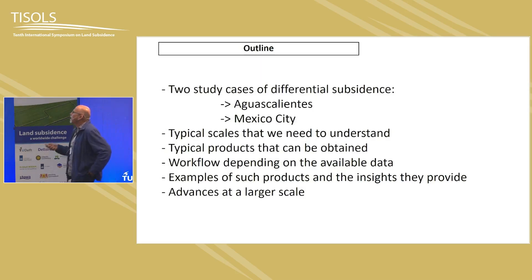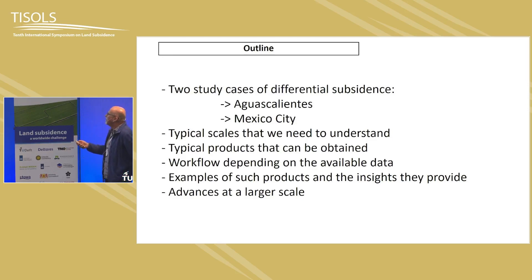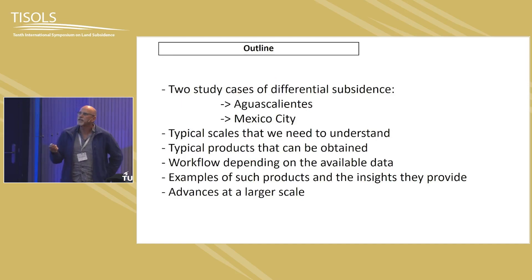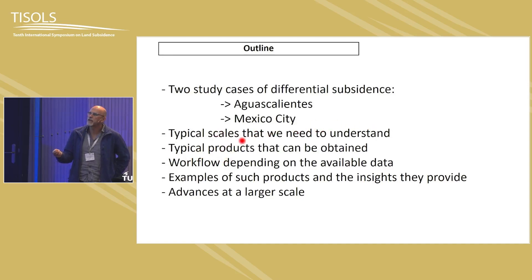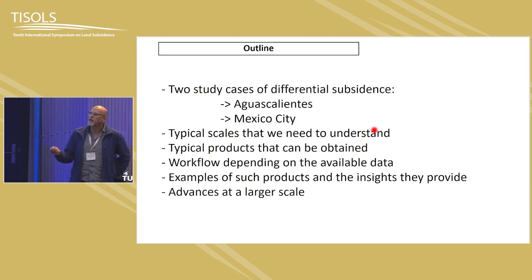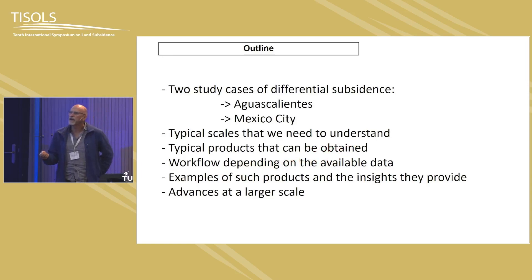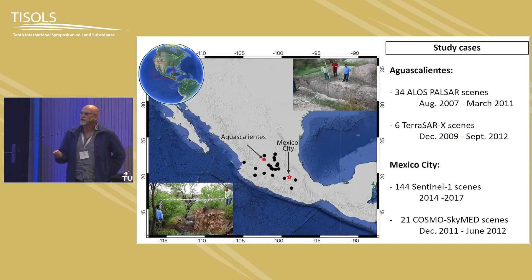The outline of the presentation: we study two cities — Aguascalientes and Mexico City as case studies — and look at the typical scale we need to understand, from more continuous features to high gradients or faults. We see what type of InSAR products can be obtained, and then a workflow to get this data with examples, and then going to an even larger scale.